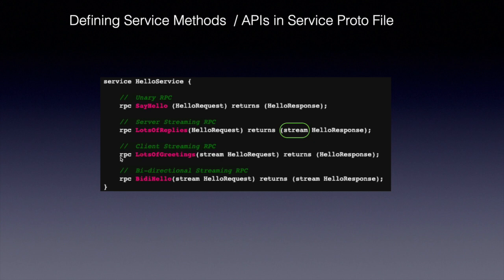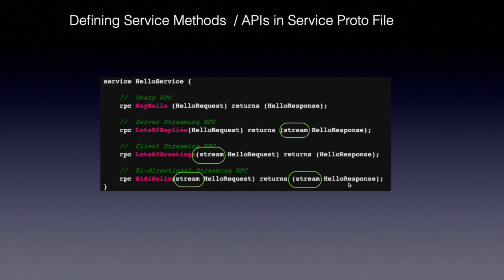The third is the client streaming RPC. This method is called LotsOfGreetings — the client sends a number of messages as a stream of requests and gets back a single response from the server. The fourth and final one is bi-directional streaming RPC, a completely new concept in the API world, made possible by the HTTP/2 protocol. In this case both client and server send sequences of messages: the client sends a stream of requests and the server responds back with a stream of messages.